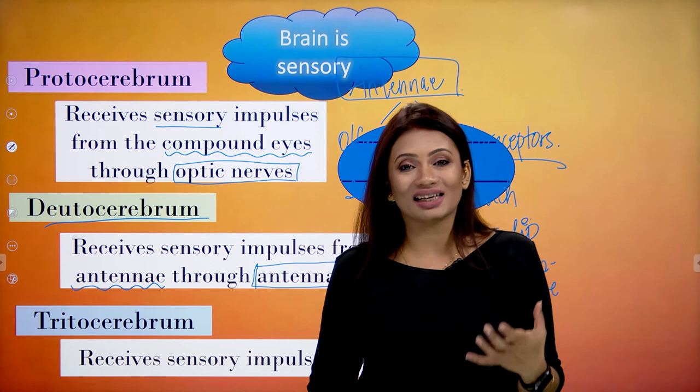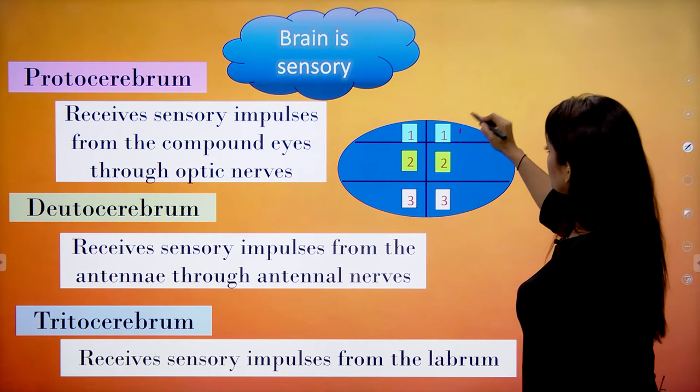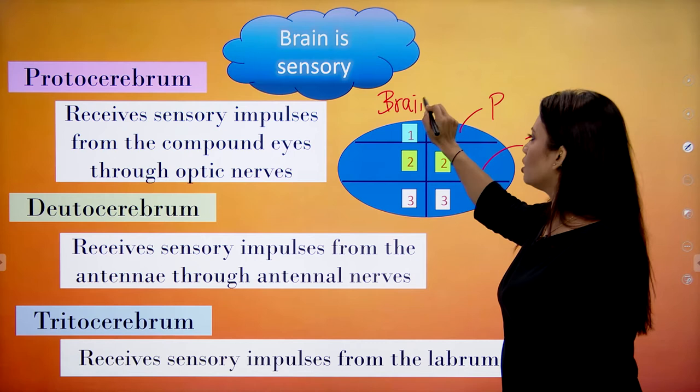Because all the nerves are being taken towards the brain, we say that the brain is a sensory organ. The three parts are distributed as: first the protocerebrum, second the deutocerebrum, and third the tritocerebrum — that is the structure of the brain.